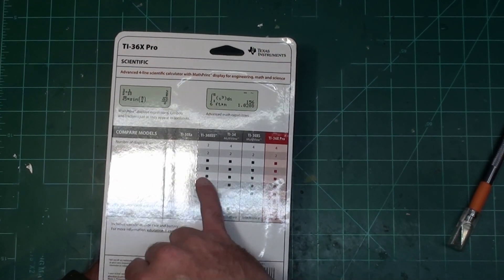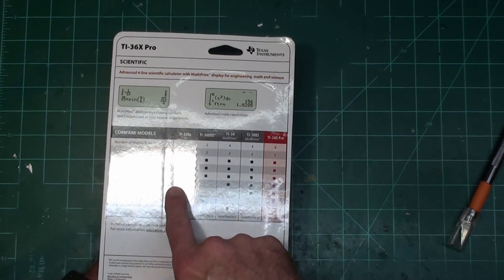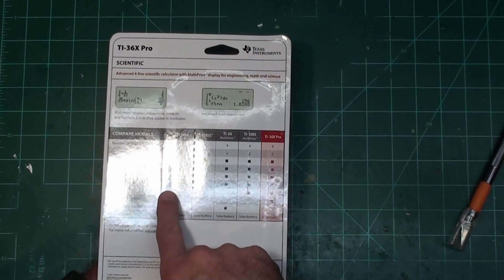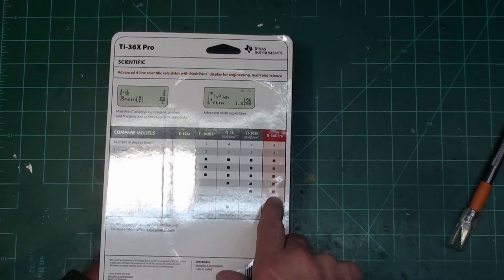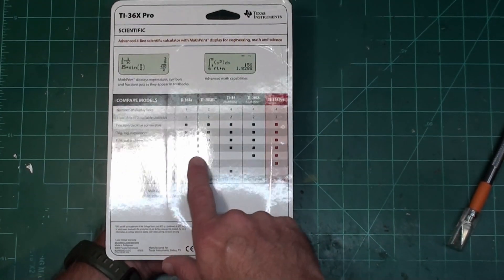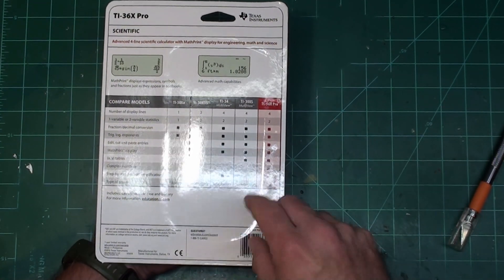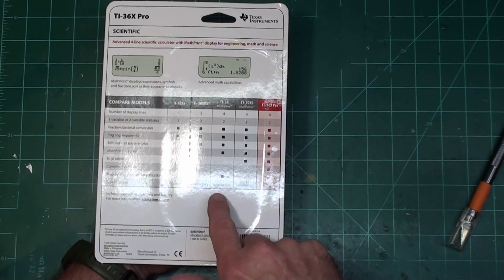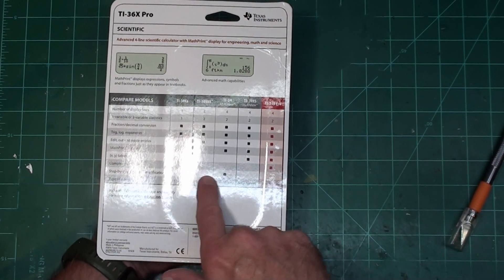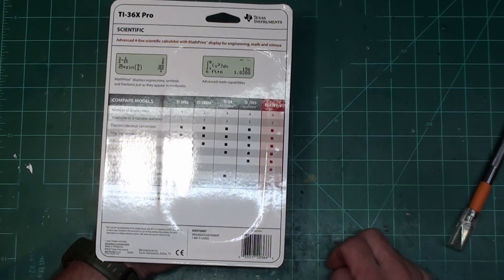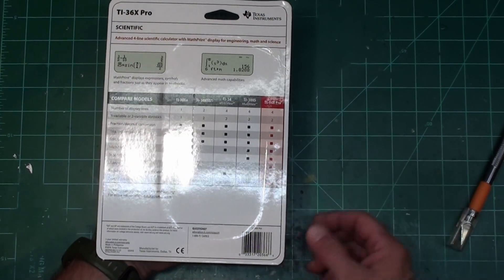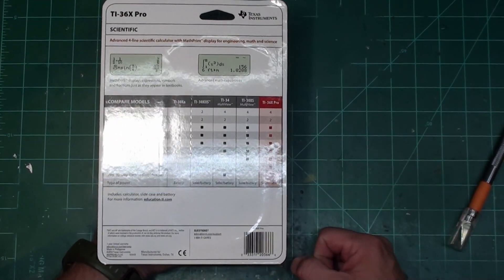Now we're getting cutting and editing and pasting entries. The TI-30XA drops off. Math print display, a lot of them drop off at that point. XY tables, we're down to just the 30XS and the 36. Complex numbers, just the 36. Step-by-step fraction simplification, only the 34 does that, but you don't really need that in most cases unless you're learning fractions.